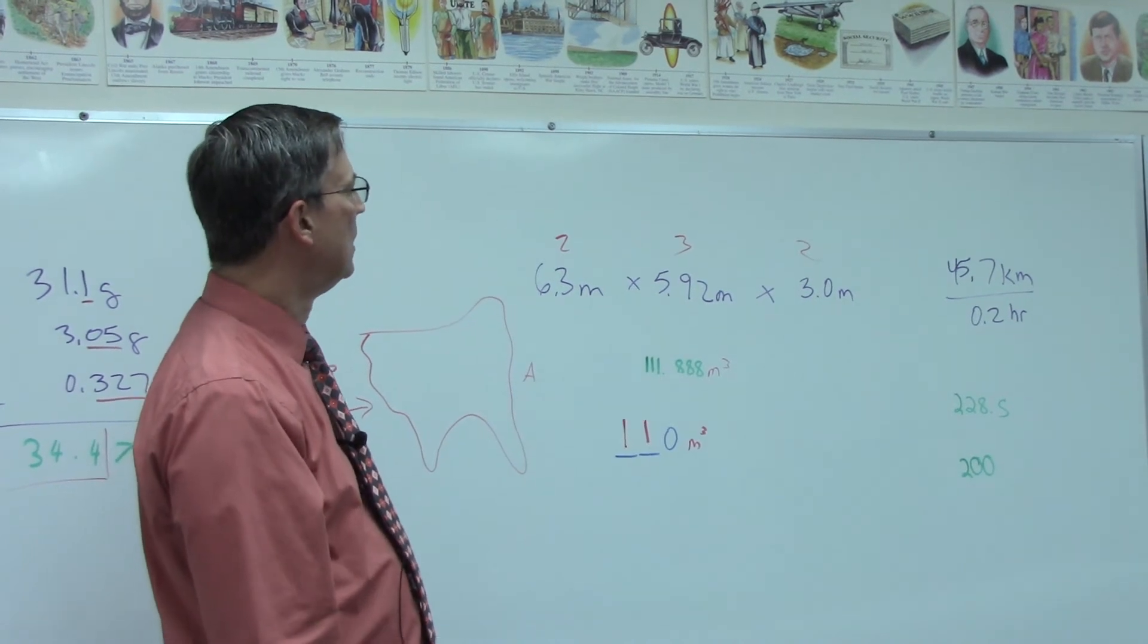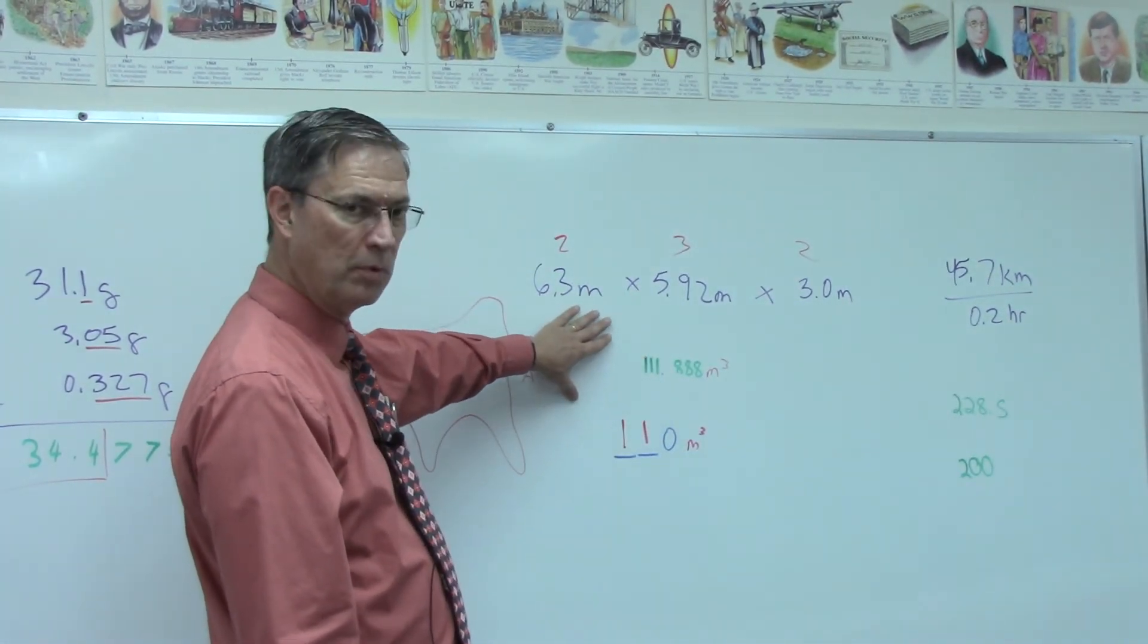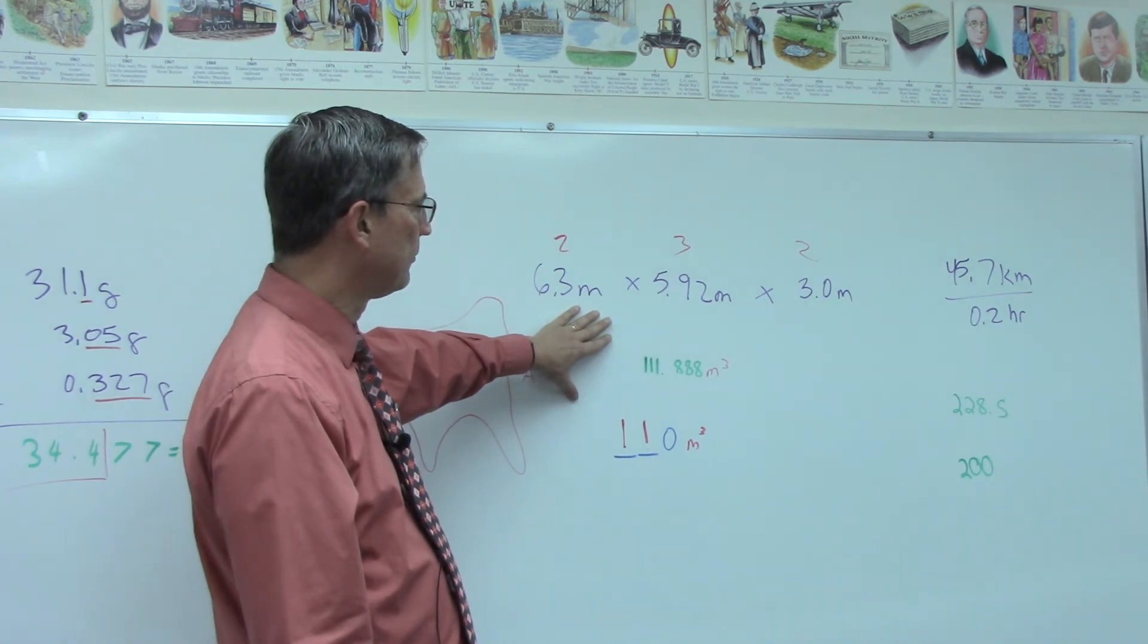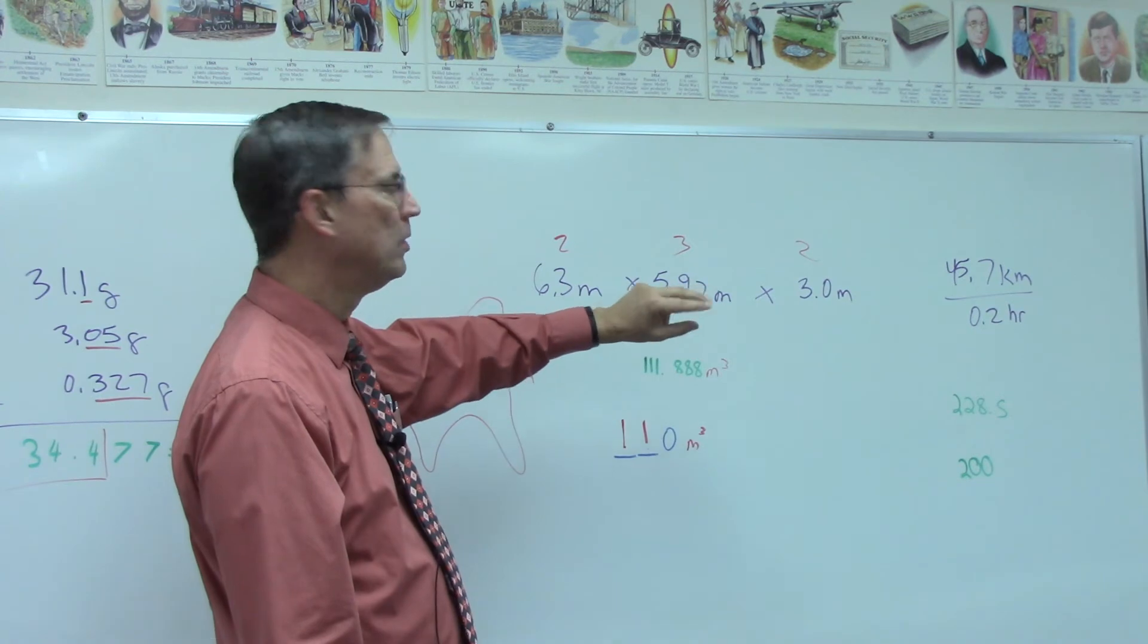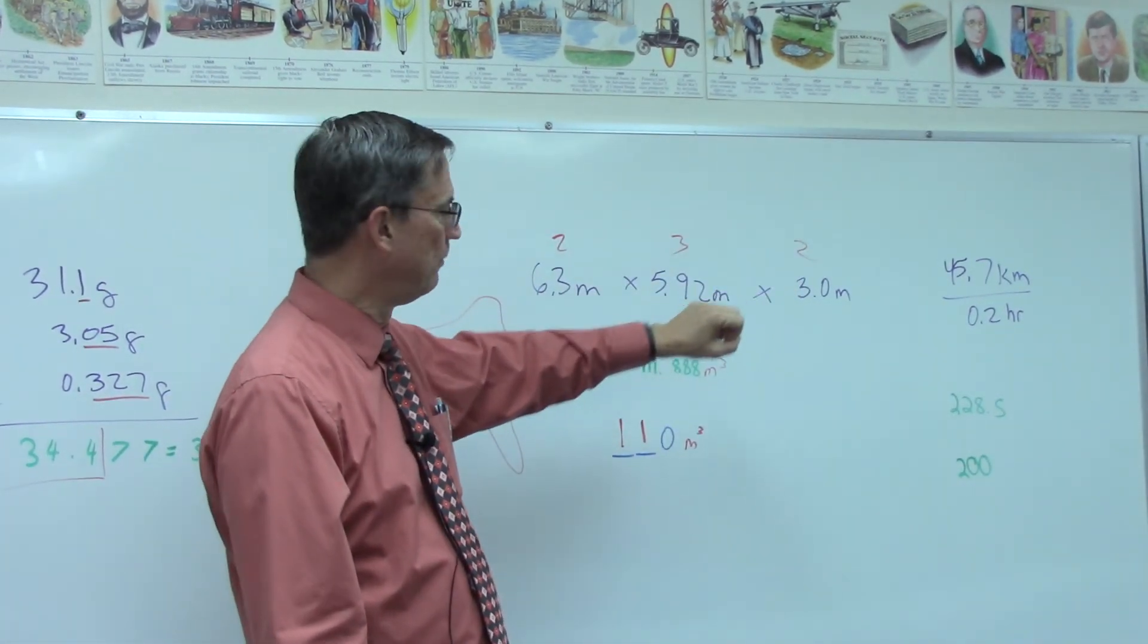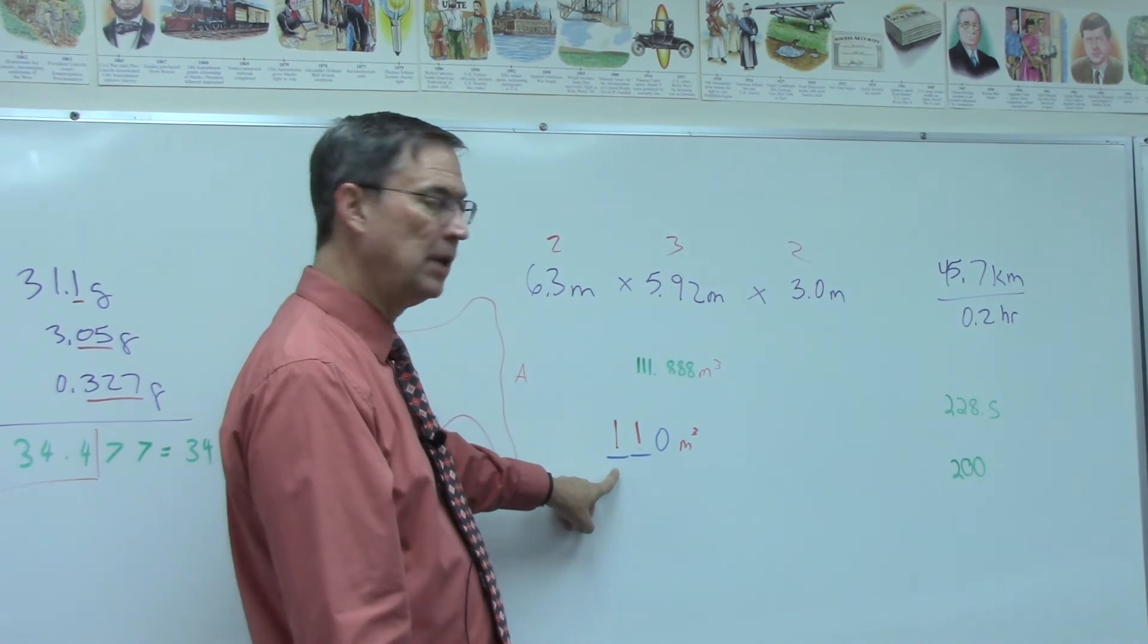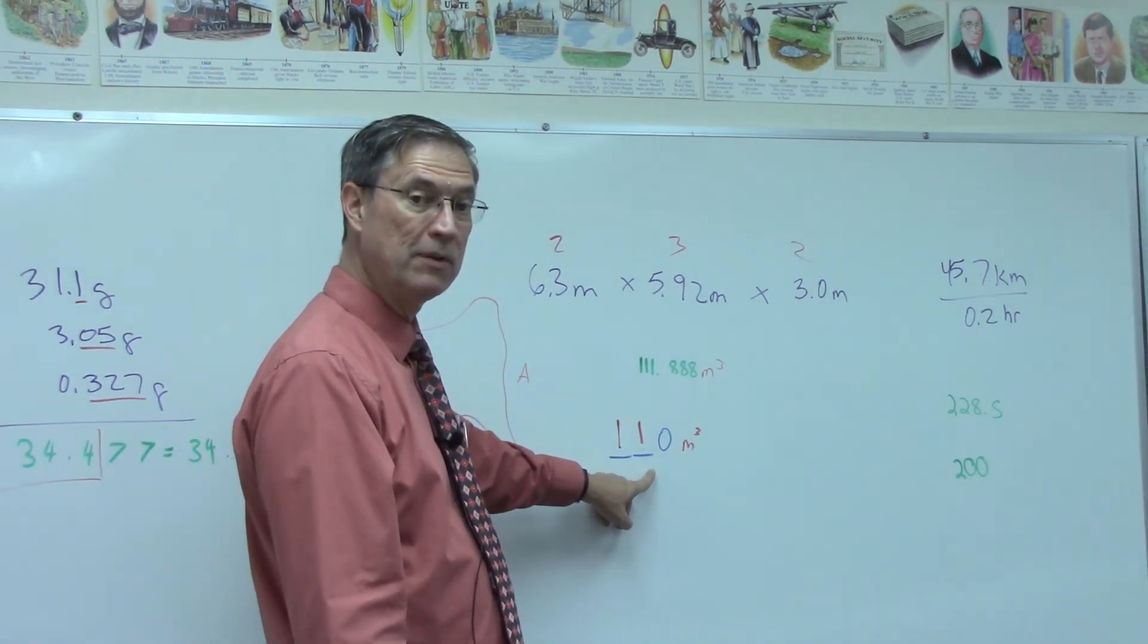So when we're doing significant figures when we're multiplying or dividing, how many significant figures can I have in the answer? The least number of any of the numbers involved in the problem. And then I start at the left in my answer, and I include that many significant figures. Everything else either becomes zeros or disappears.